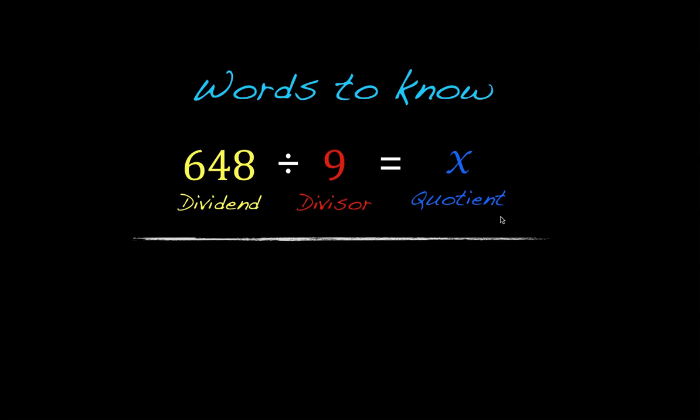And then finally, your quotient is going to be the answer to your problem. And that's going to be how much or how many are in each group. Now, we don't know that yet, so we're just going to assign this variable here and call it x. And that just simply means that that's a number that is unknown at this point.